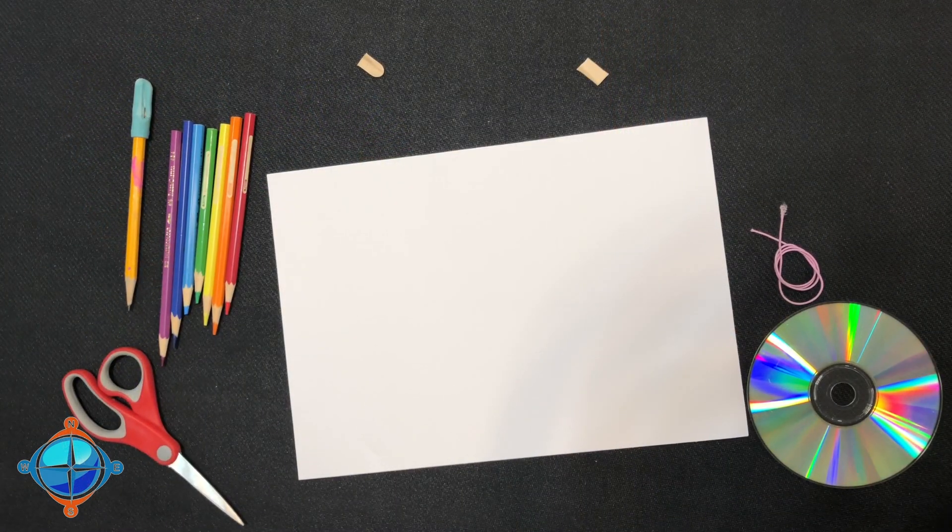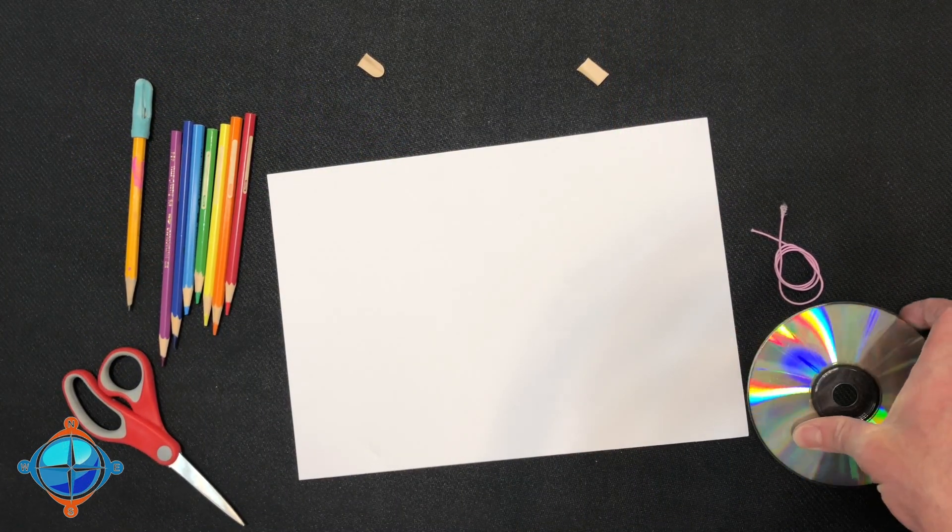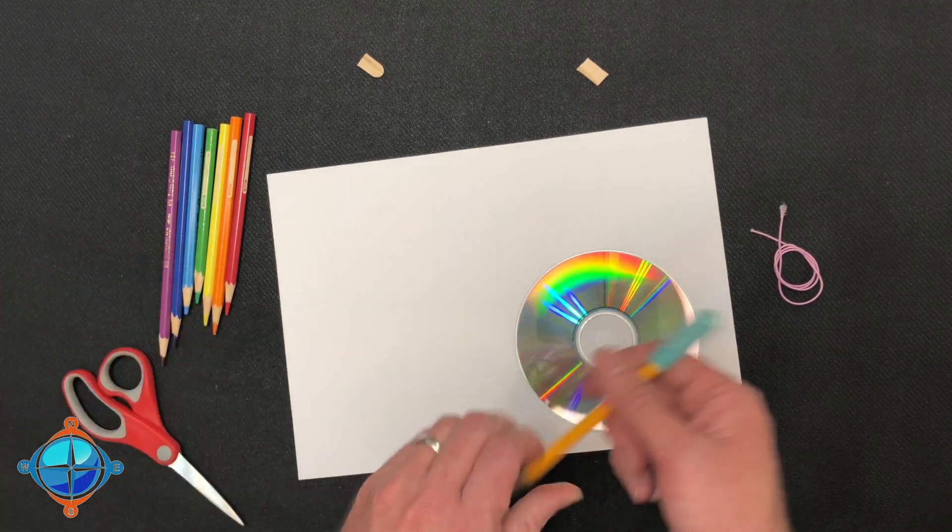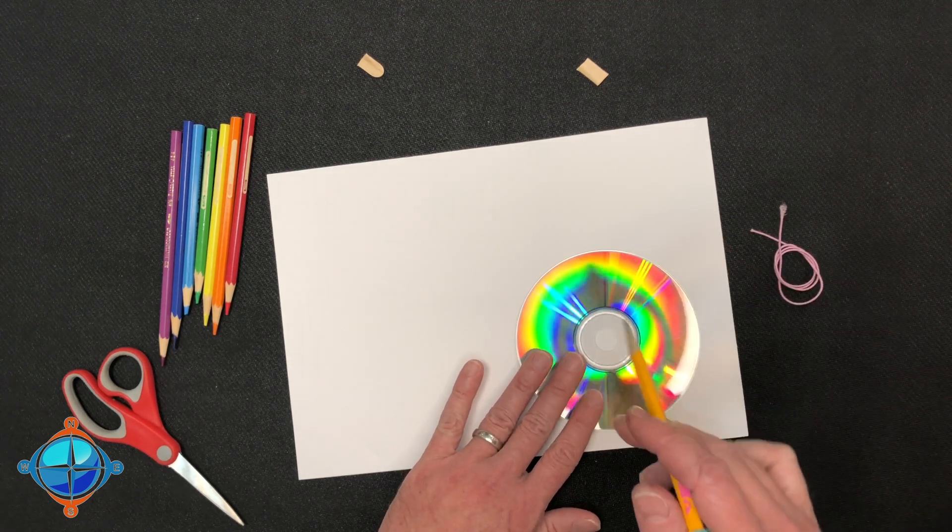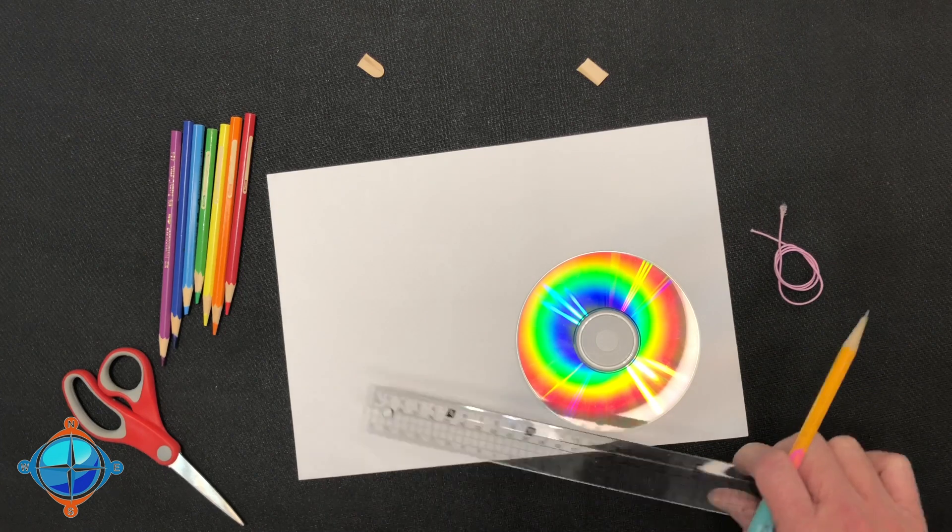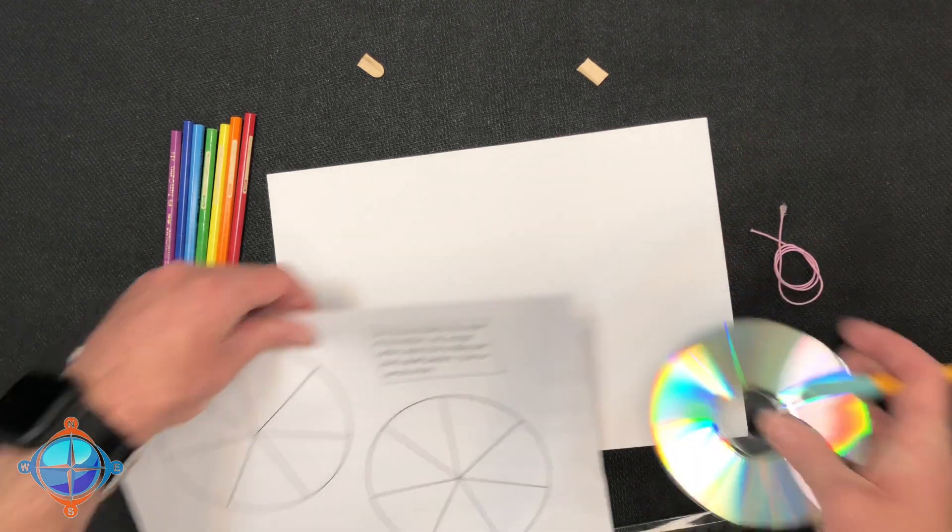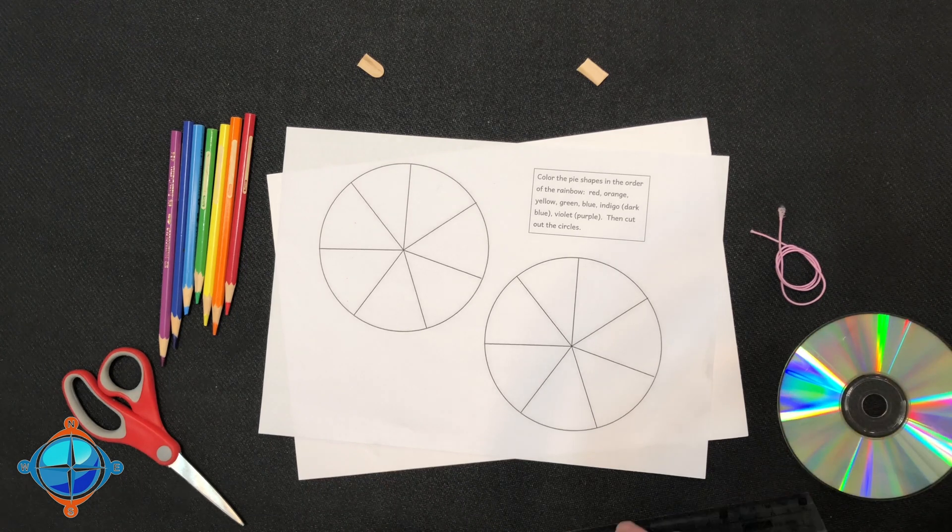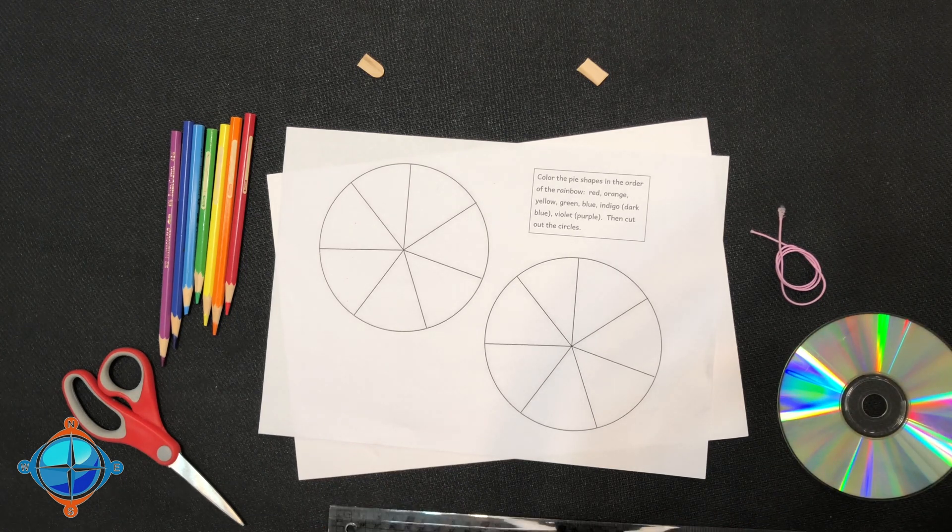Okay, now that we have everything ready, there are a couple different ways you can make a Newton's Disc. You could use your CD and a pencil to trace a circle, and then you could use your ruler to draw the pie shapes. Or, we've made it a little easier by giving you a template.